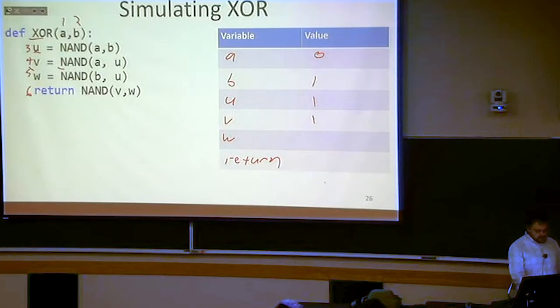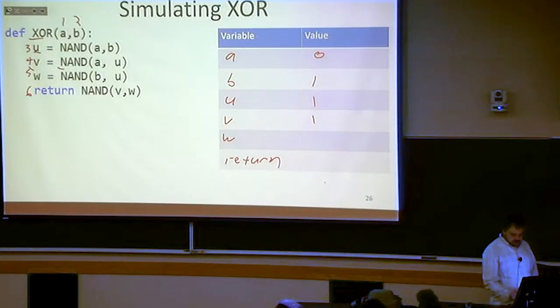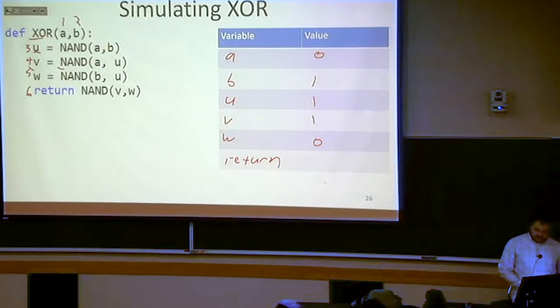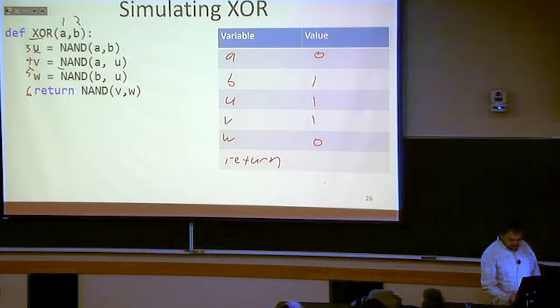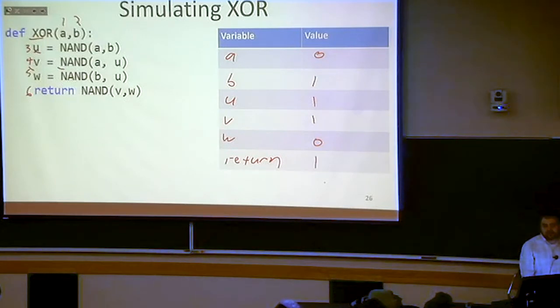And then what is W? Well, W is B NAND U. So what is that? Well, that's 1 NAND 1, which is 0. And then we're going to return V NAND W, which 1 NAND 0 is 1. So our return value is 1.